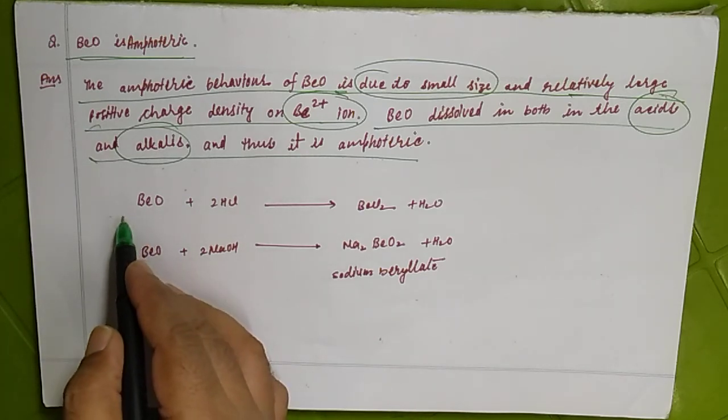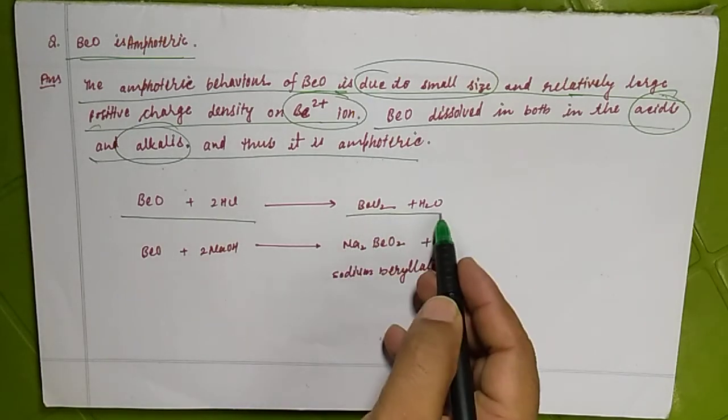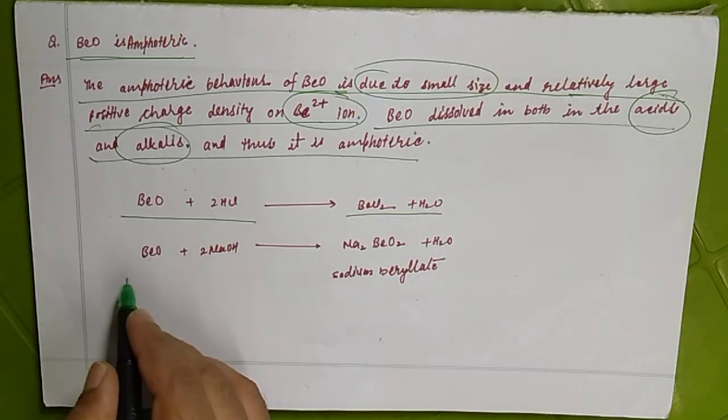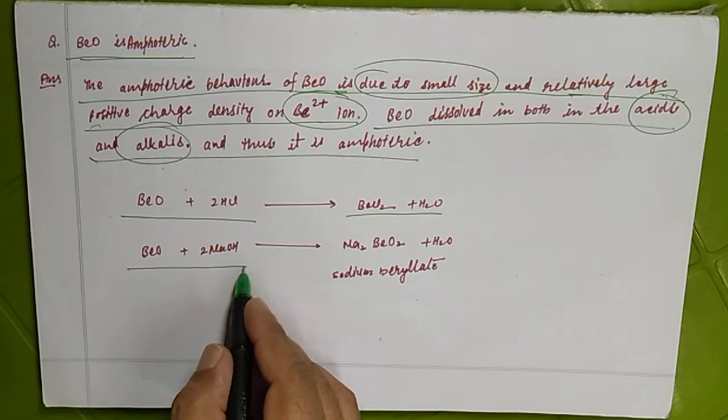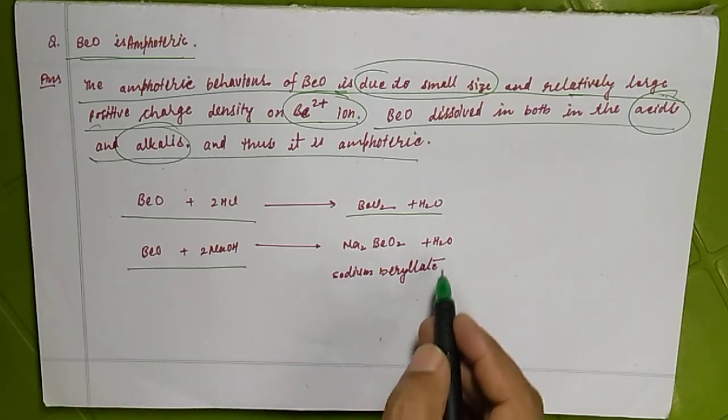So beryllium oxide is reacting with HCl, giving beryllium chloride and water. Beryllium oxide is reacting with the base alkali, giving sodium beryllate and water.